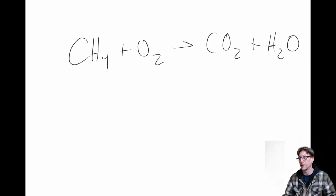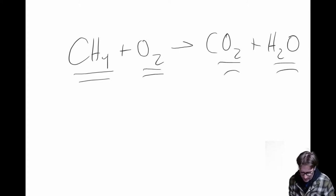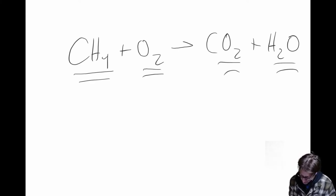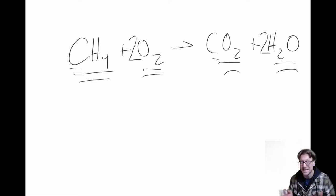So now we have a couple of species here: we have methane and oxygen, carbon dioxide and water. This is the equation for combustion. To balance it, we put a two in front of H₂O and a two in front of O₂. Now we're balanced — one carbon, one carbon; four hydrogens, four hydrogens; four oxygens, four oxygens.